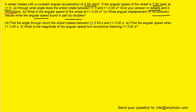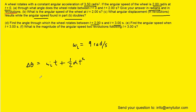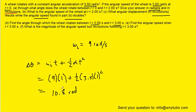Now on to part D. We have to be careful here because the time interval is changing from two to three seconds. At the two-second mark the angular velocity was nine radians per second — the result found in part B — and that is the initial angular velocity for this interval. Using the angular displacement formula with nine radians per second, a time of one second, and angular acceleration of 3.5 radians per second squared, we get roughly 10.8 radians.